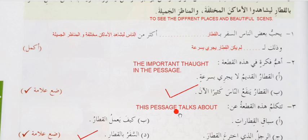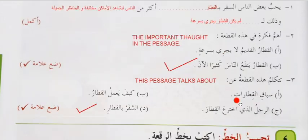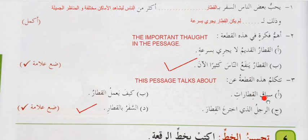Tatakallum haza-i-qita — this passage talks about. Zalaama means put a sign. So we are putting a sign on this. The options are: sabaq al-qitarat — the train race; kefiya hamala al-qitar — how the train carries; ar-rajul al-lazi akhtara al-qitar — the person who invented the train; as-safar bil-qitar — travel by train. I think option D is the proper one — I put the alama, the correct mark, here.